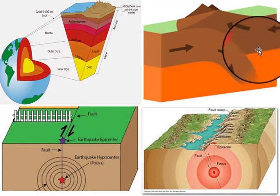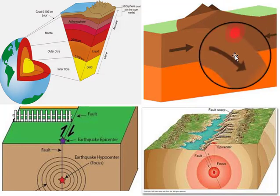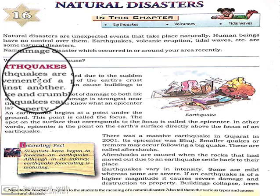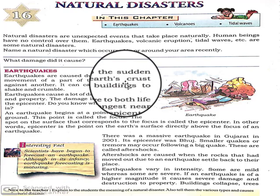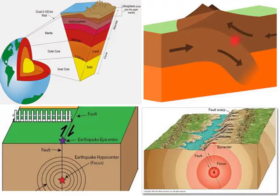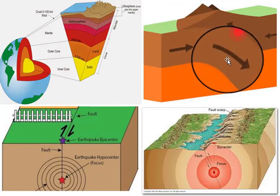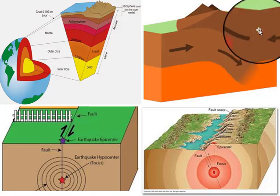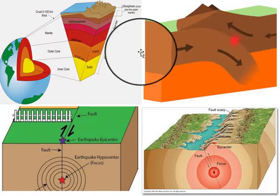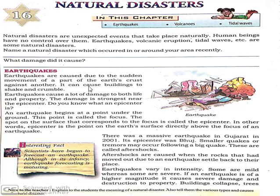This collision produces a huge amount of energy which travels throughout the earth's surface and causes huge damage. This is our earthquake. Earthquakes are caused due to the sudden movement of a part of the earth's crust against another. They can cause buildings to shake and crumble. Earthquakes cause a lot of damage to both life and property.